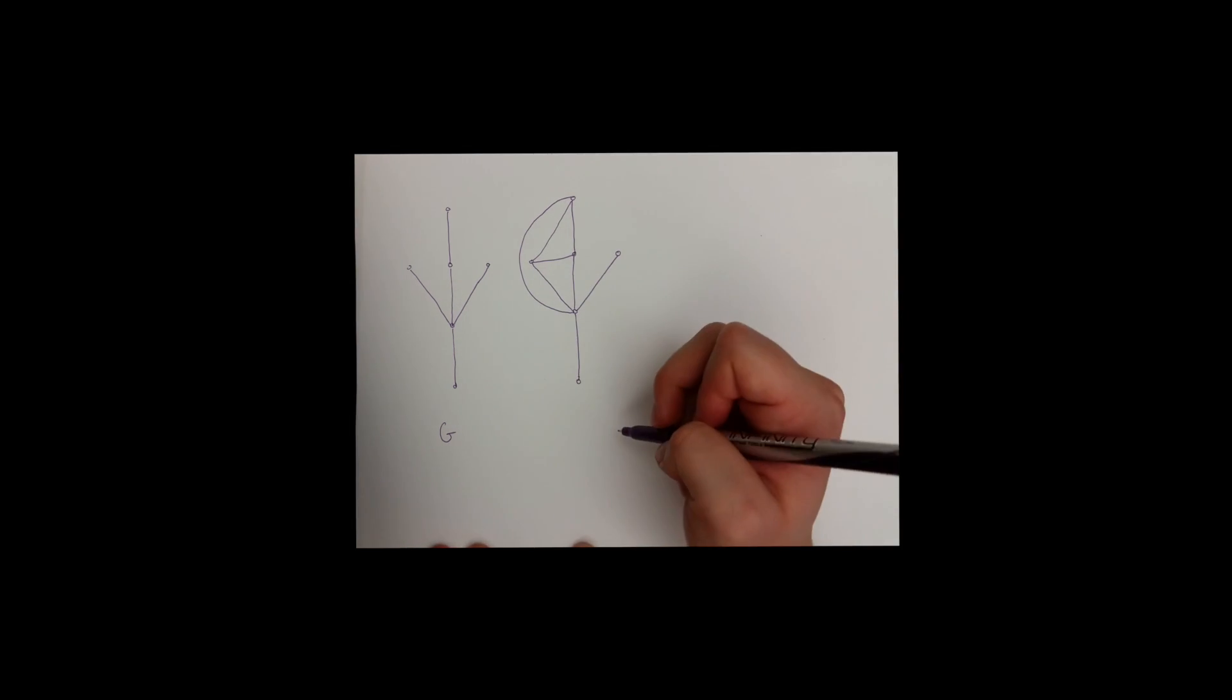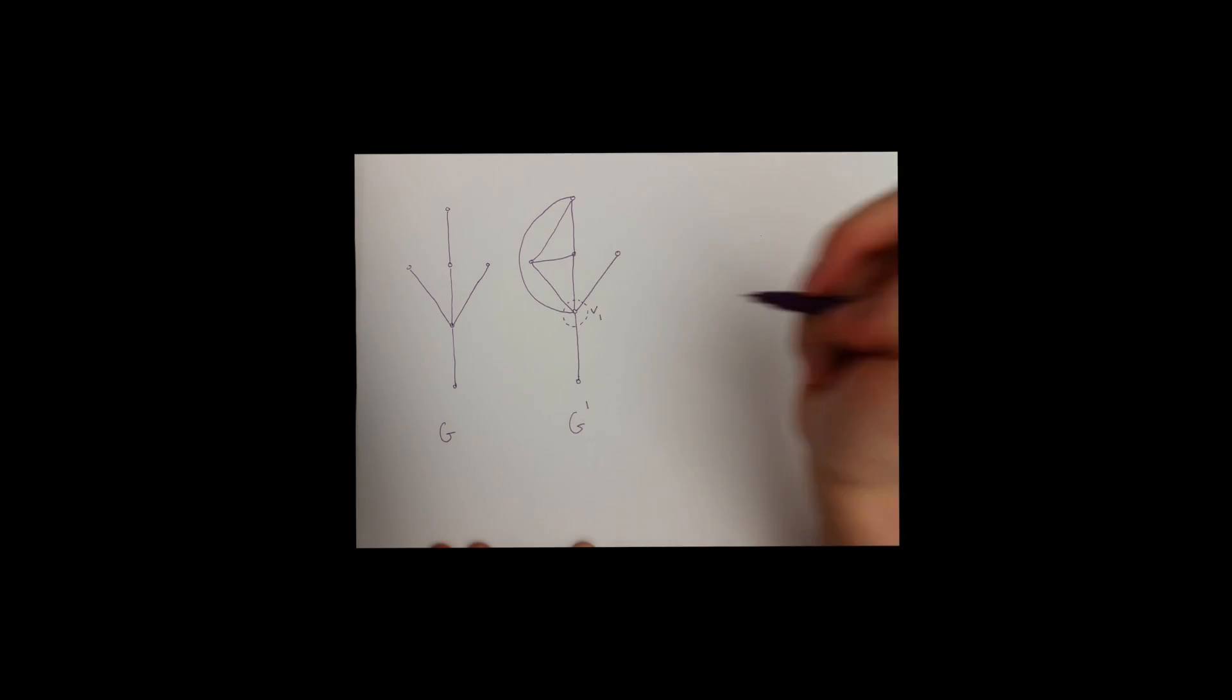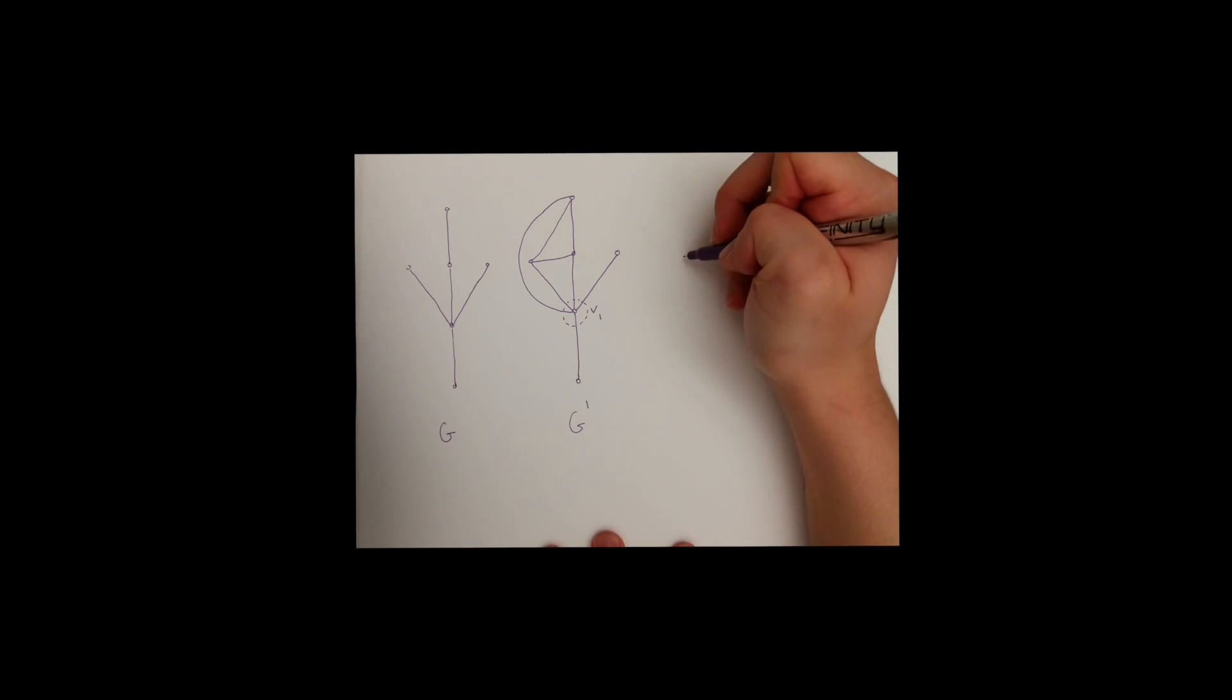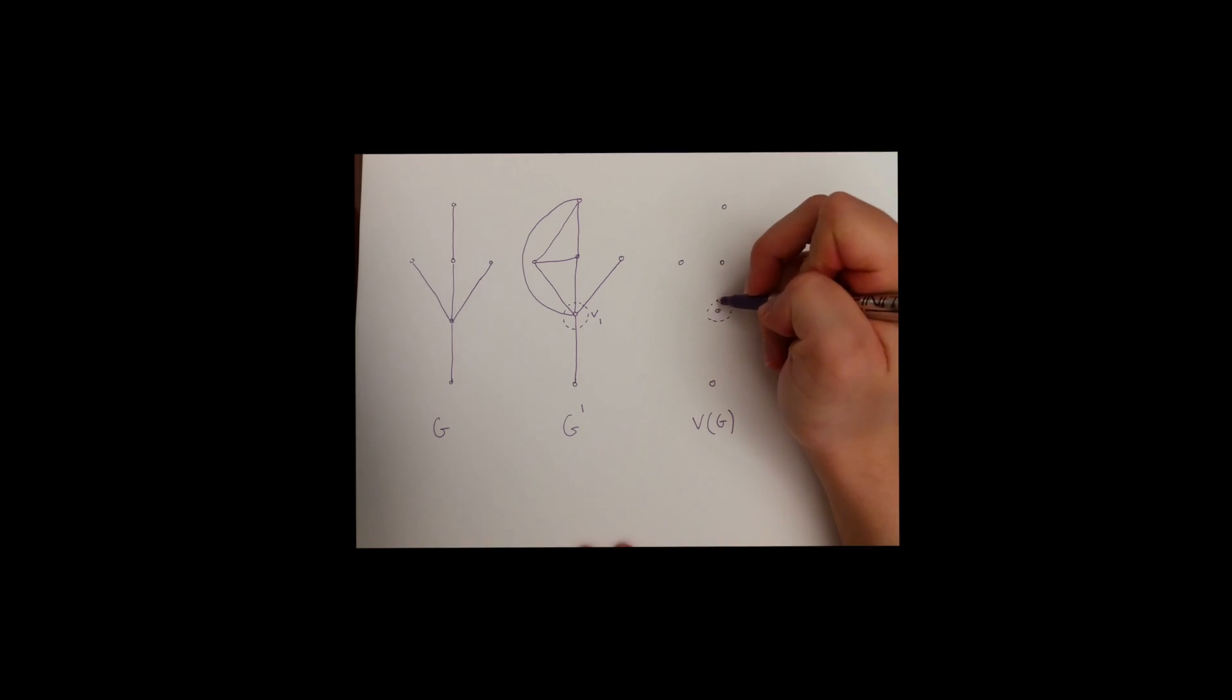and name V1 the vertex that is connected to every other vertex. V of G is the collection of all the vertices in G, as I've drawn here, V1 still being in the same position as it was in G prime, our maximal graph without a perfect matching of G.